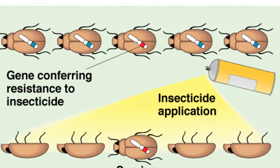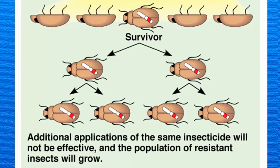When the insecticide is applied, there's going to be differential survival. Only those which have that favorable characteristic are able to survive. If they're able to find a mate who also survived, that trait can then be passed down to the next generation. So additional applications of that same insecticide will not be effective, and that population of resistant insects will grow. There will be a survival of the fittest, which in this case is something that we would like to avoid.